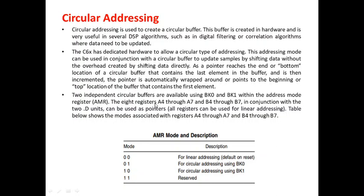The 8 registers A4 through A7 and B4 through B7 — totaling 8 — in conjunction with the two dot-D functional units can be used as pointers. The table below shows the modes associated with registers A4 through A7 and B4 through B7. The AMR register mode is 2-bit: if the value is 00, it points to linear addressing; 01 means circular addressing using buffer BK0; 10 means circular addressing using buffer BK1; and 11 is reserved for a special case.